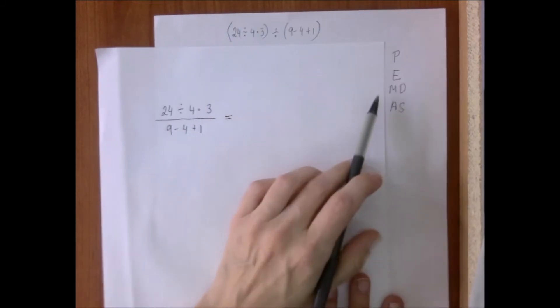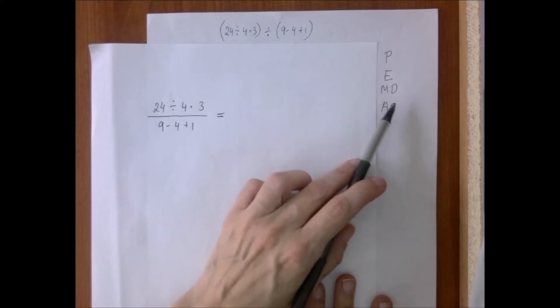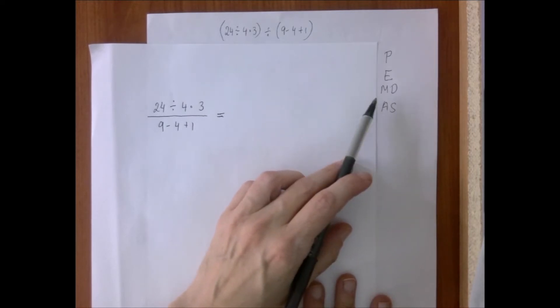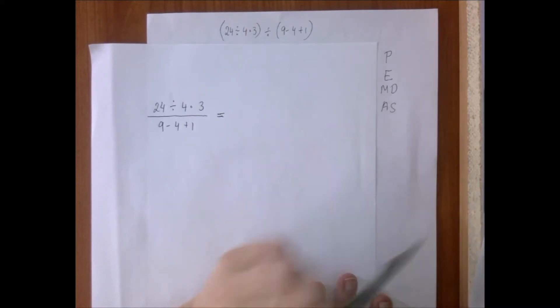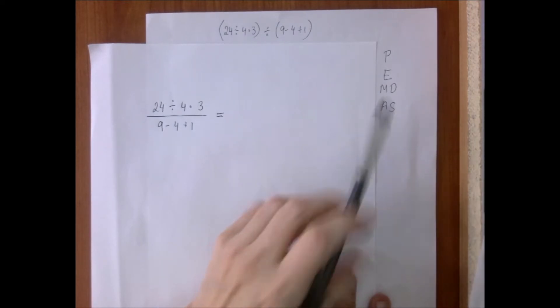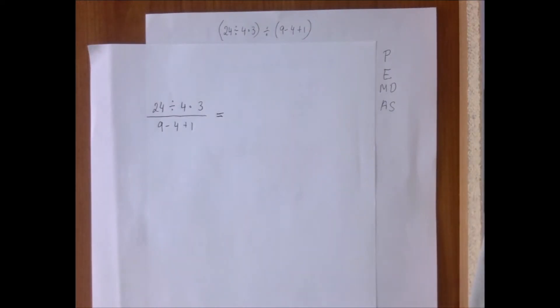Because in the word PEMDAS, we pronounce the letter M before the letter D, we tend to think that multiplication comes before division, but that is not true. According to our order of operations agreement, multiplication and division are equally strong, so we go left to right.